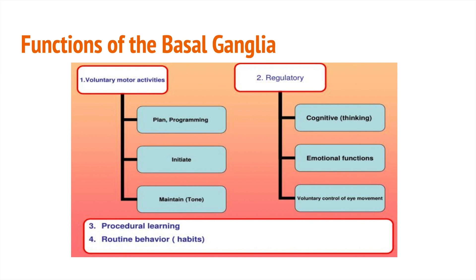Unfortunately, if an injury damages the basal ganglia, this normally harmonious process is disrupted. This can cause the muscles that initiate movement and the muscles which inhibit movement to activate at the same time, leading to various movement disorders — like chorea, which are small, random, repetitive movements that may look like playing the piano, or dystonia, which would be sustained involuntary muscle contractions that force people into abnormal positions. While the basal ganglia are primarily involved in movement, they're also connected to the prefrontal cortex, and since the prefrontal cortex helps regulate behavior, the basal ganglia may play a role in that as well.